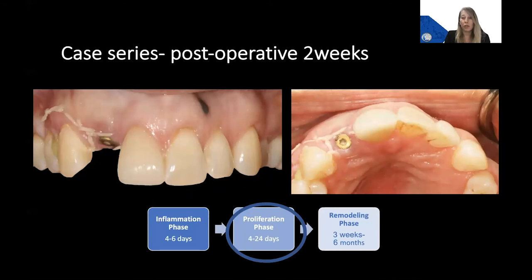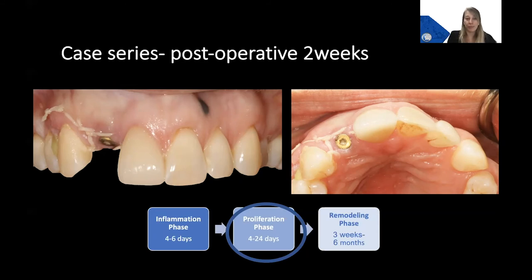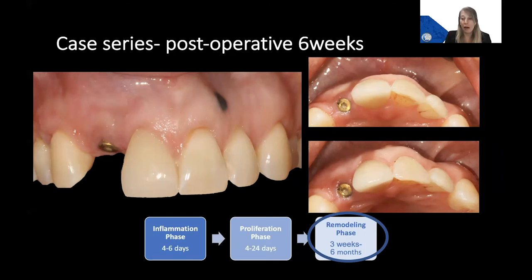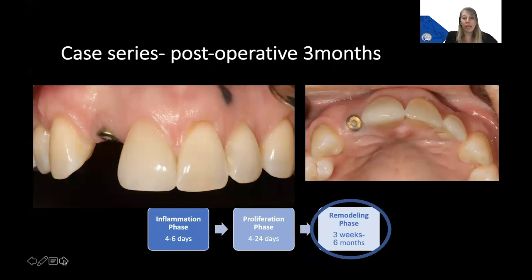The patient returns two weeks postoperatively for suture removal, showing excellent preservation of the site. At this time, the Geistlich Fibroguide material is in its proliferation phase, allowing for optimal cell ingrowth and blood clot stabilization. At the six-week healing check, we can see persistence of volume stability and excellent preservation of the papilla. At this stage we're in a remodeling phase, with slow deposition of soft tissue into the graft material and replacement with autogenous tissue. At three months, the patient returns for the integration check and impression, again showing excellent stability of the soft tissue profile on the buccal aspect and great tissue maturation.